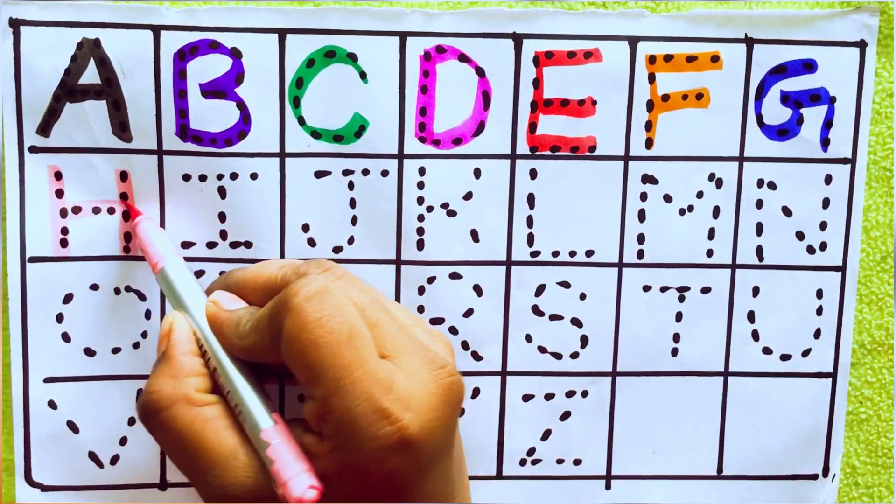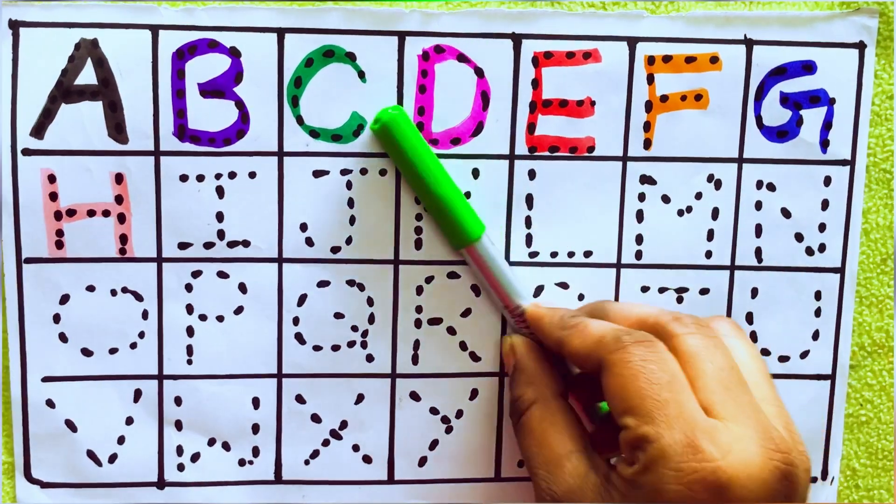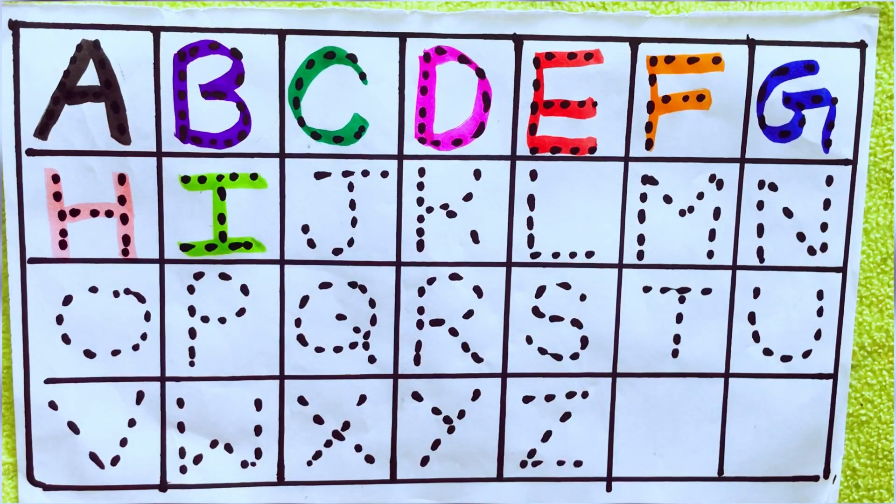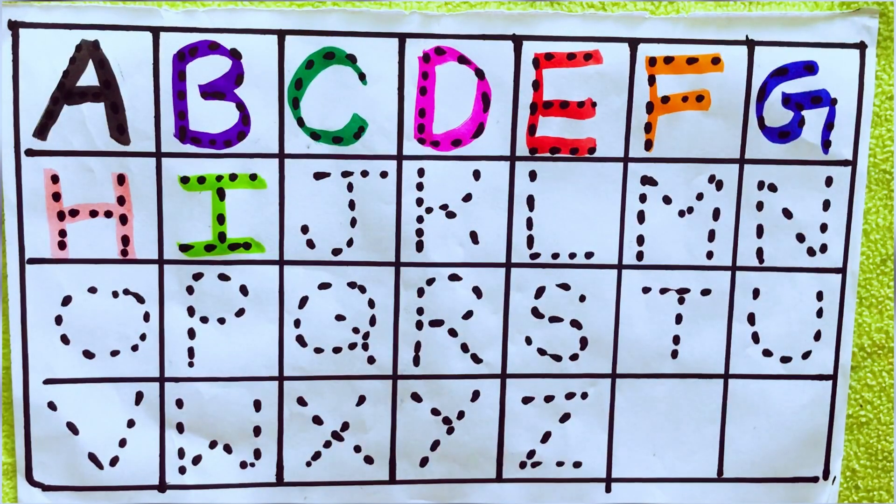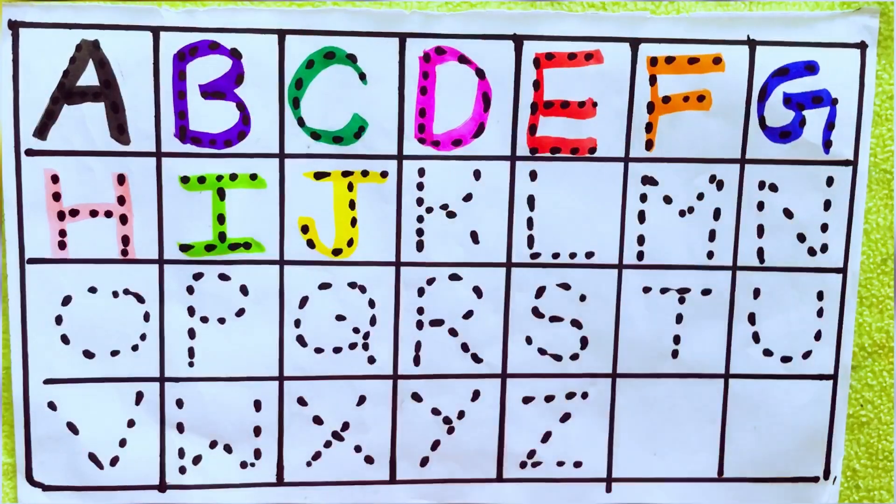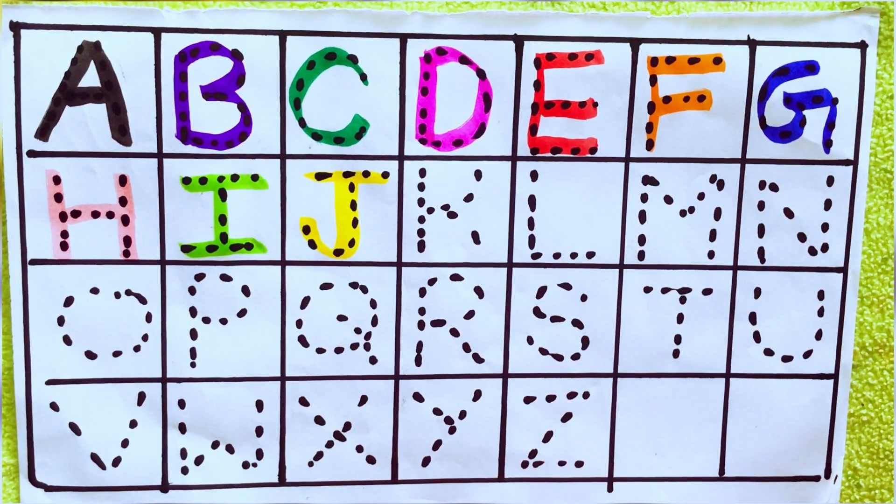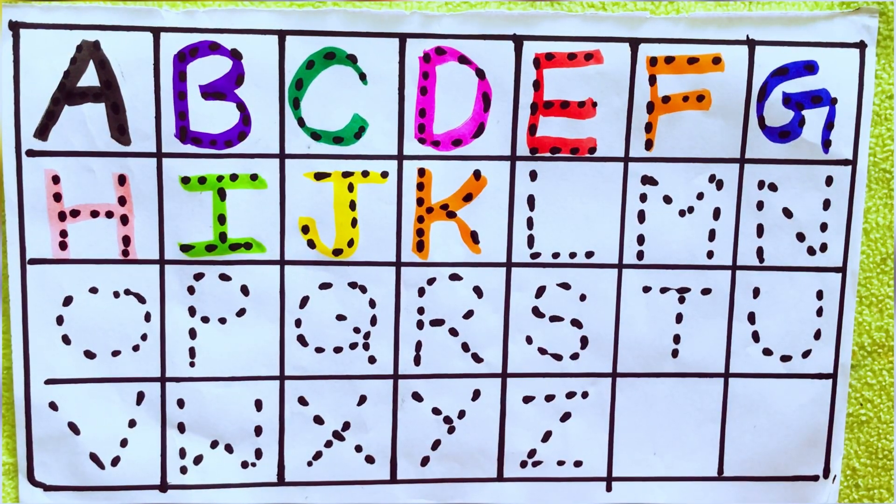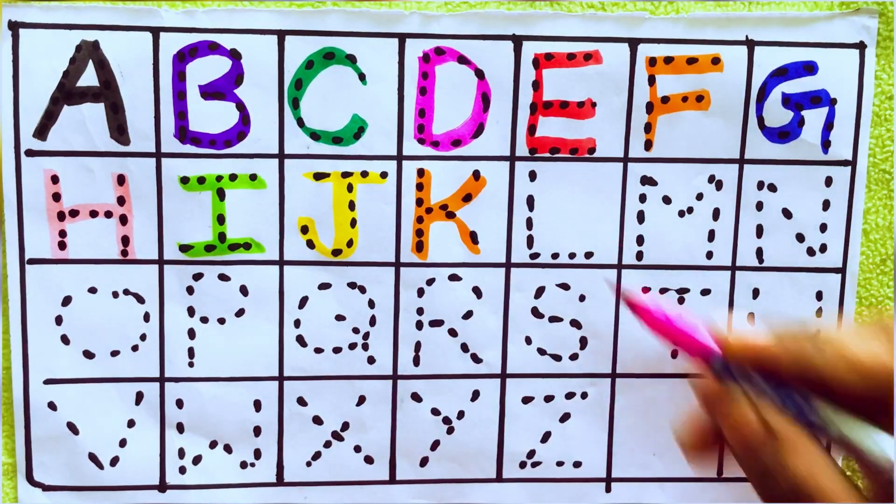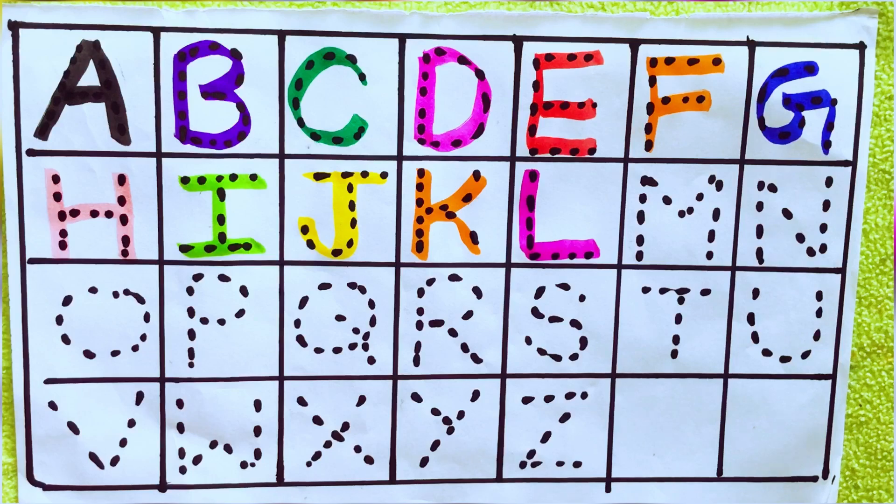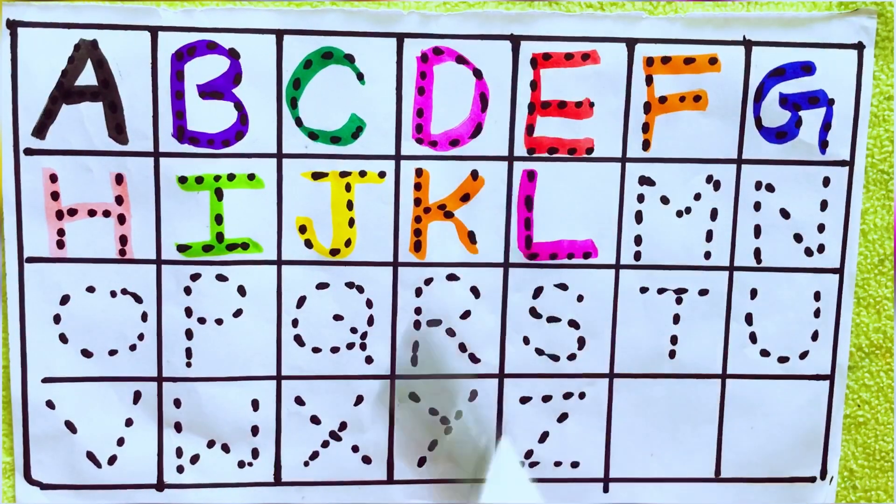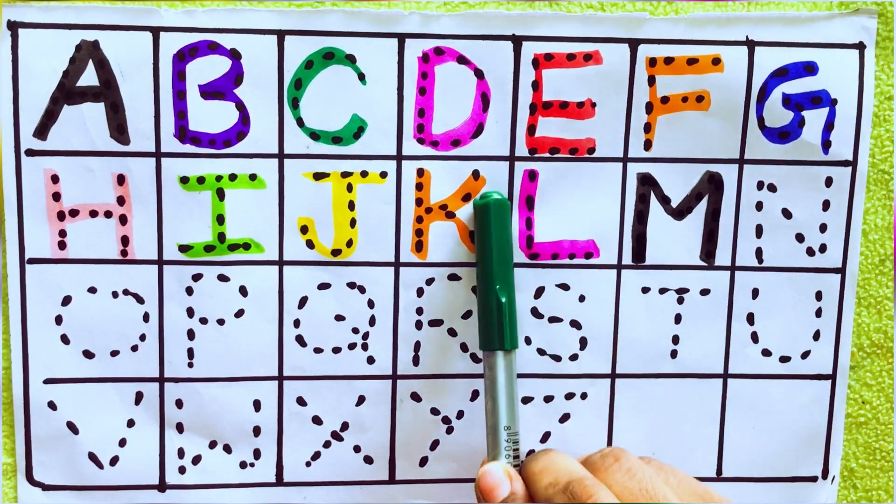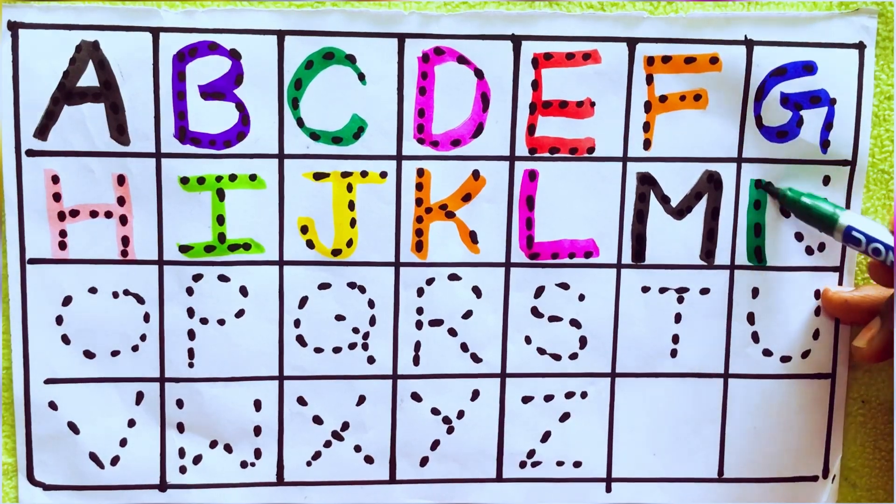Light pink color H, H for hat. Green color I, I for ink. Yellow color J, J for jar. Orange color K, K for kite. Pink color L, L for lion. Black color M, M for mango. Green color N, N for nest.